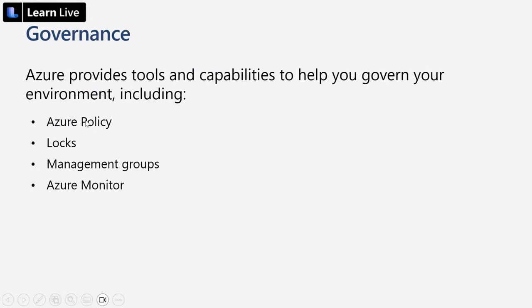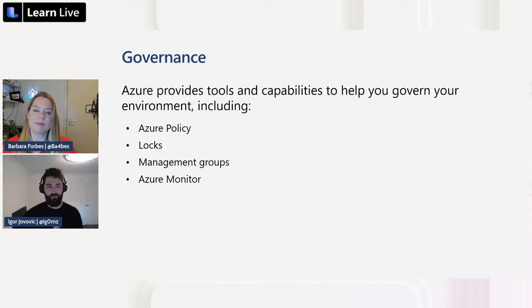To summarize the governance section: we looked at management groups, Azure Policy, resource locks, and Azure Monitor. These aren't the only governance resources available, but they're key ones you can deploy consistently with your Bicep templates.